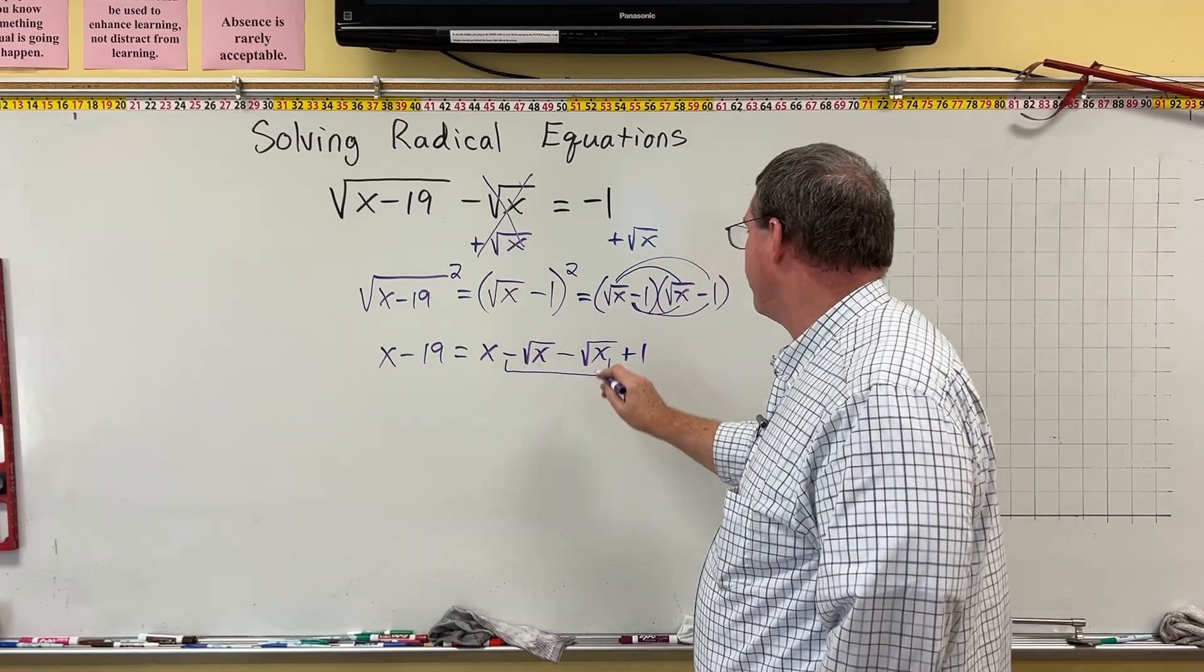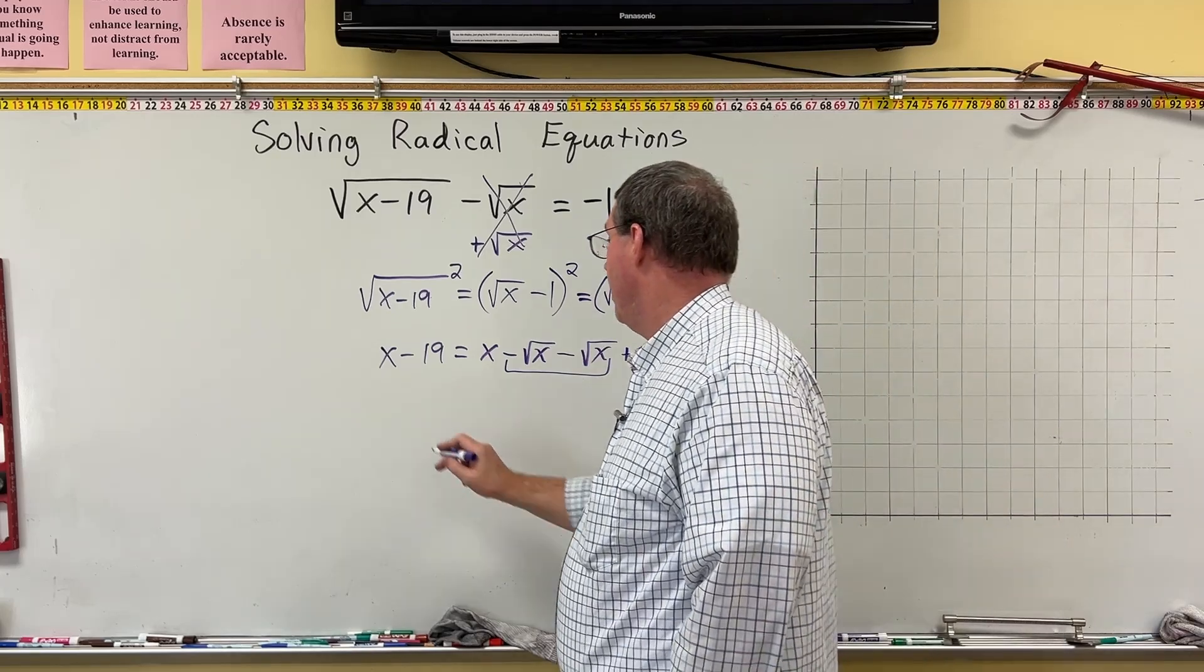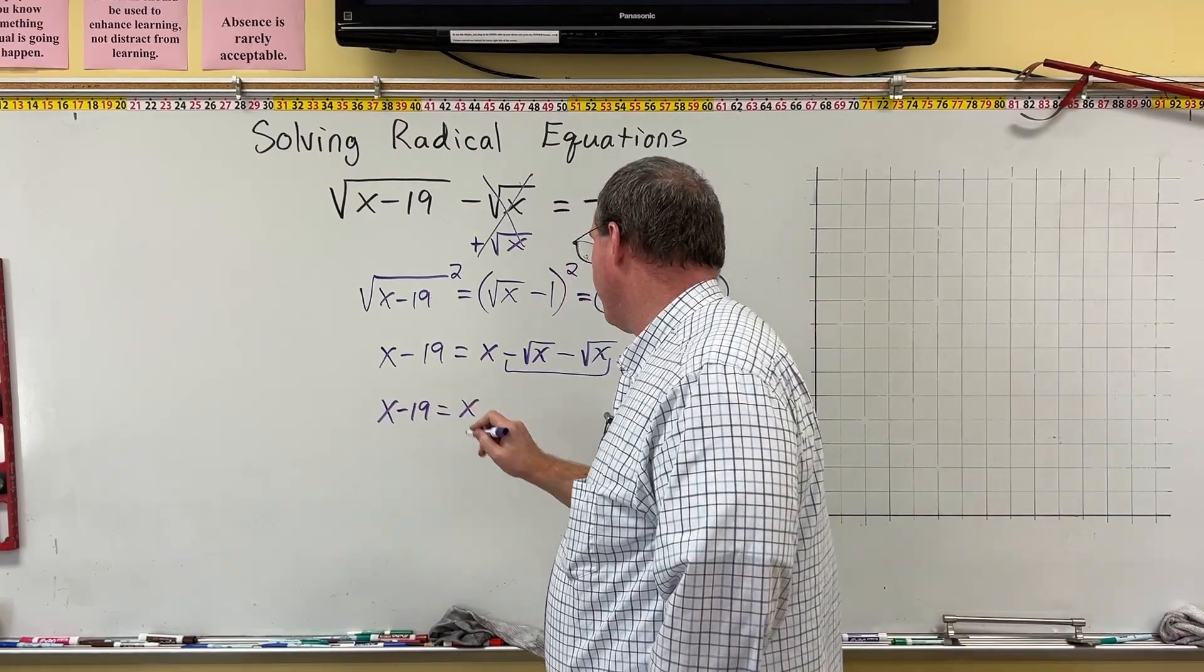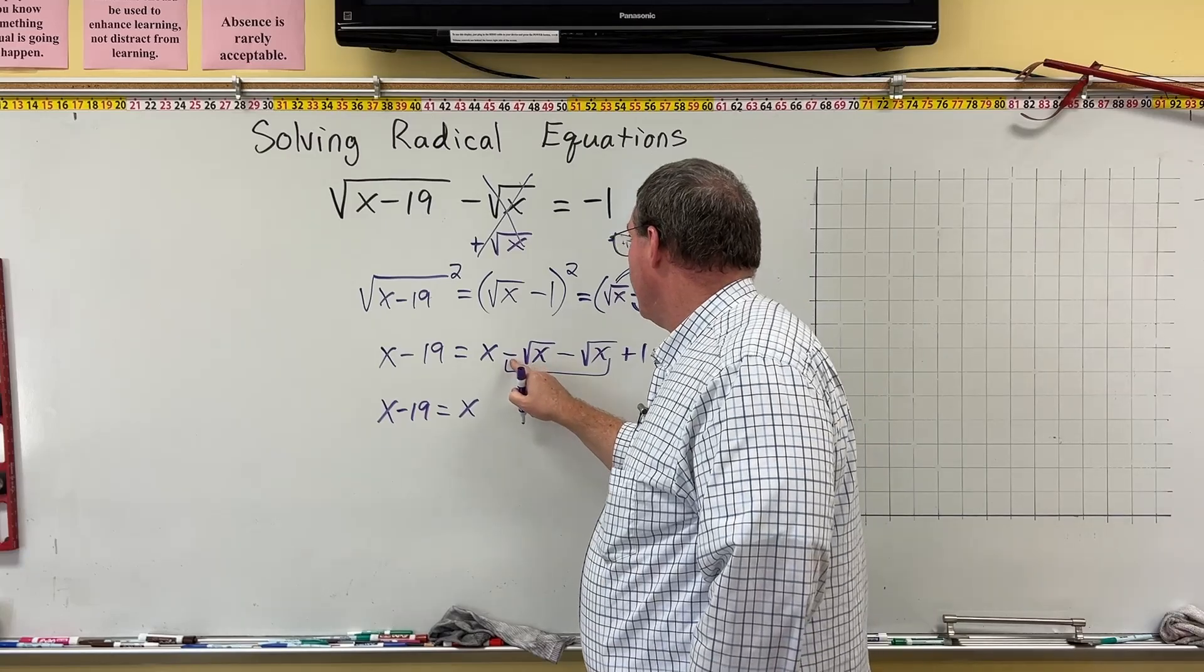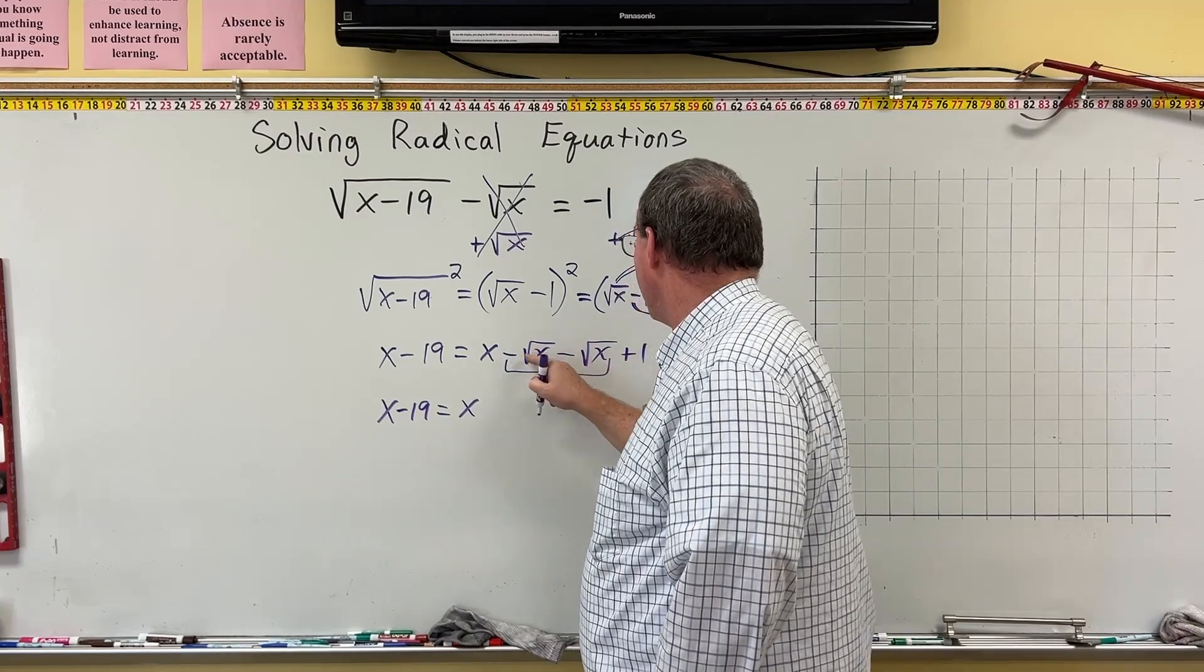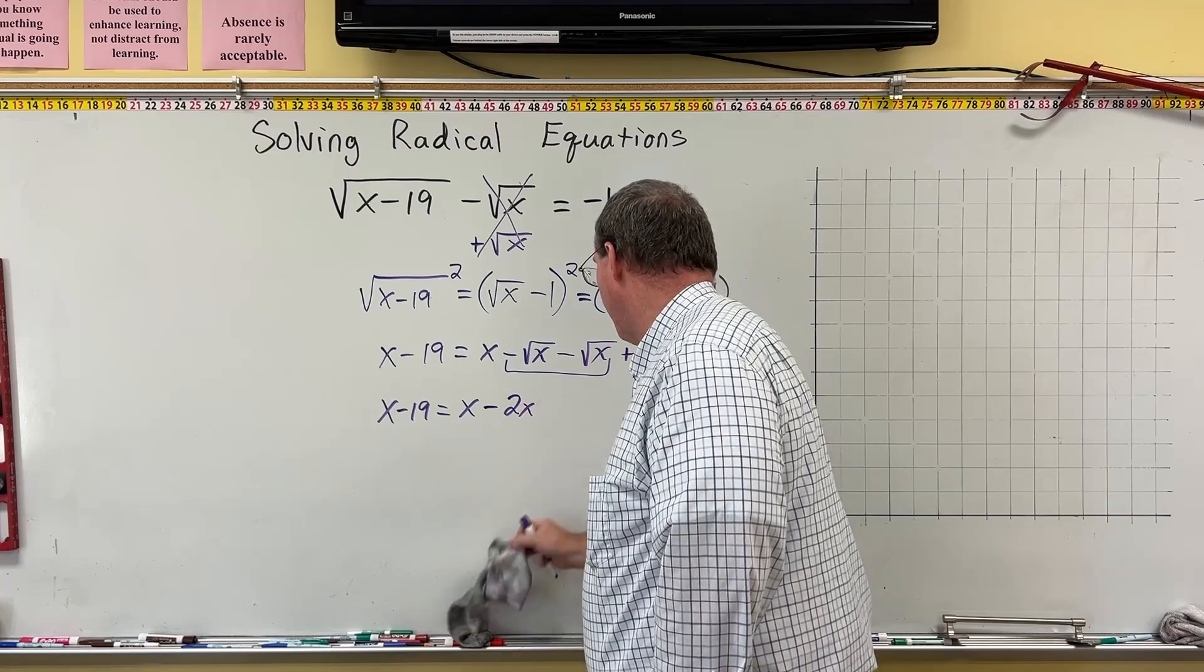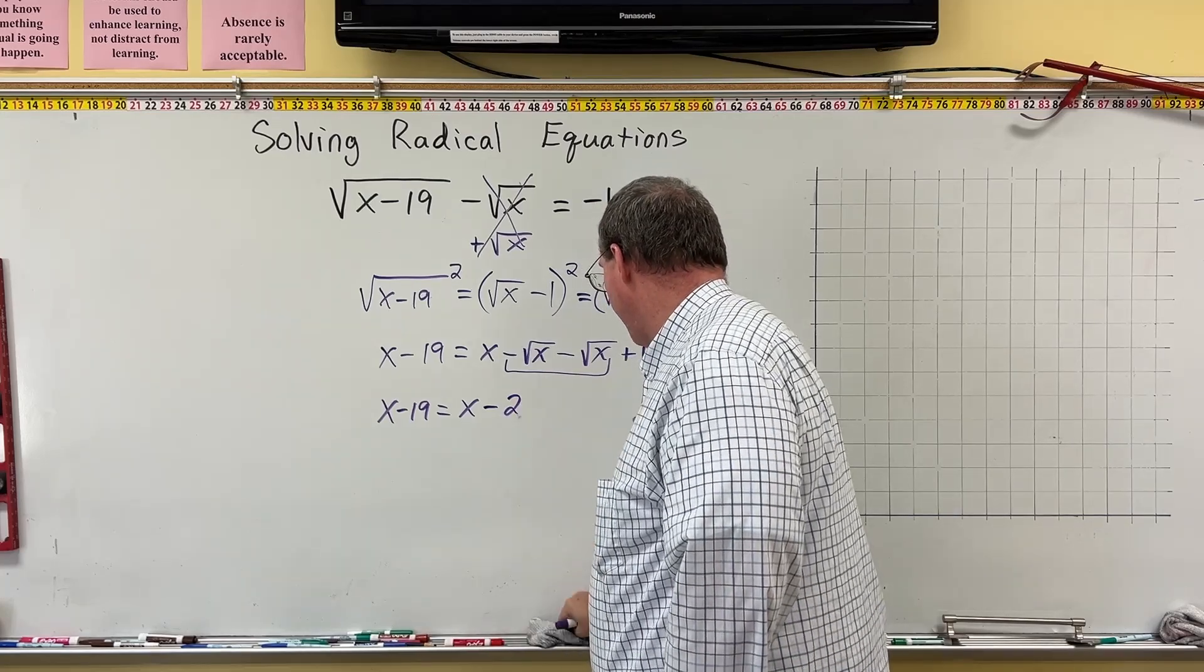This right here, these are like terms. We can combine those. And so we wind up with x minus 19 is equal to x minus the square root of x minus the square root of x is minus 2—excuse me, minus 2 square root of x.